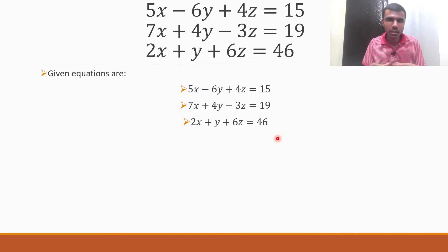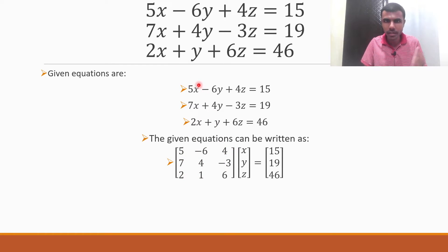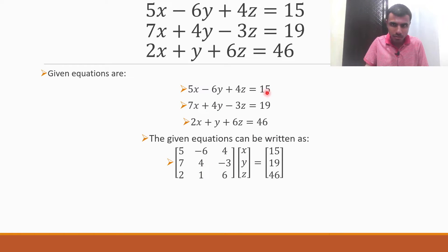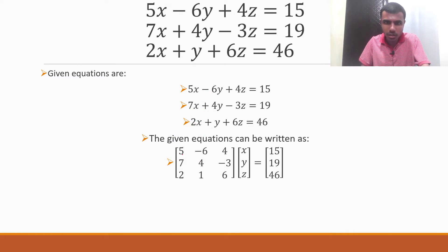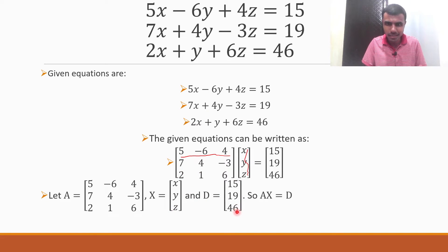How would we convert it to matrix form? The given equations can be written as a matrix with x-coefficients, y-coefficients, and z-coefficients: the coefficient matrix is [5, -6, 4; 7, 4, -3; 2, 1, 6], multiplied by the variable matrix [x; y; z], equaling the RHS matrix [15; 19; 46]. Take the first matrix as capital A, second as capital X, and third as D. So we get A times X equals D.